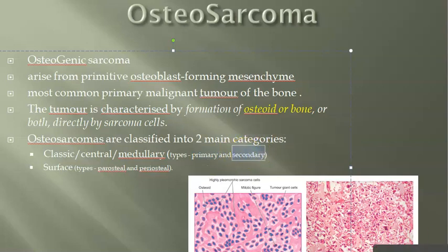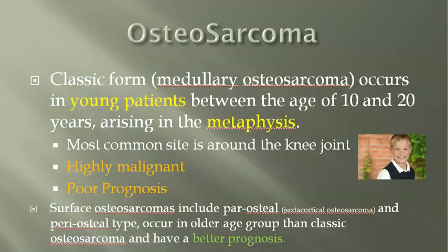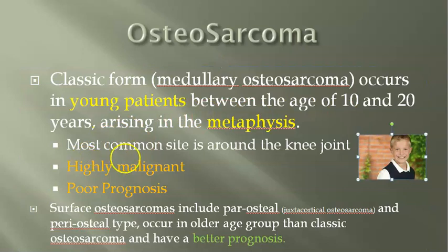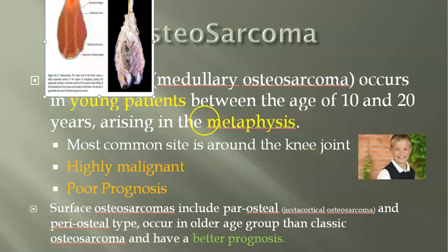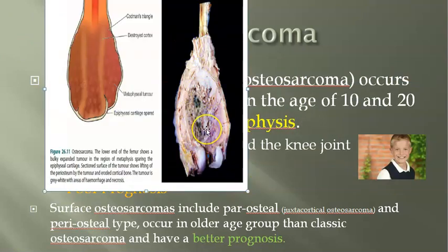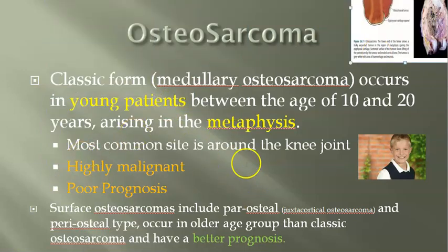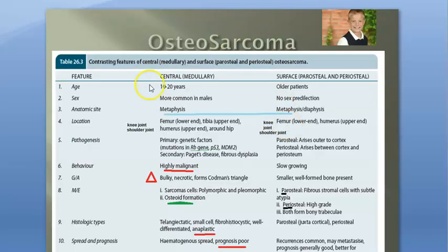The medullary or central osteosarcoma affects young patients, usually males aged 10 to 20, and affects the metaphysis of the bone. You can see in the diagram how the bone has become affected - there is necrosis and hemorrhage. The central type is highly malignant. Primary osteosarcoma is caused by genetic factors like RB gene mutation and p53 mutation - these tumor suppressors are mutated - and MDM2 is overexpressed.